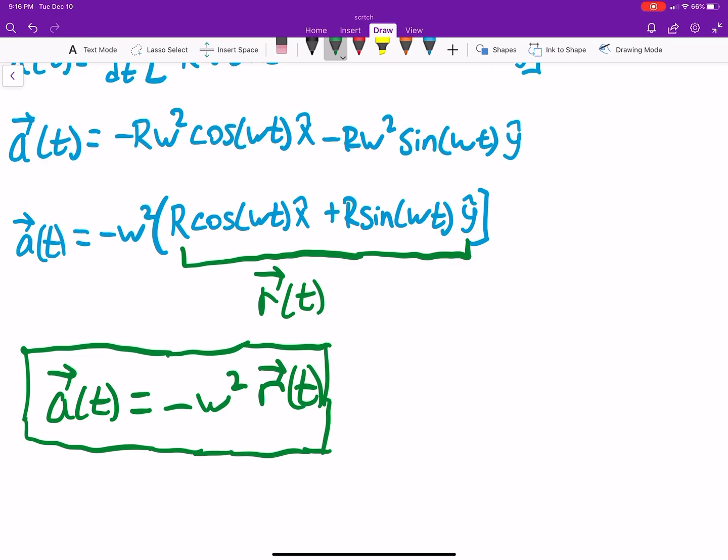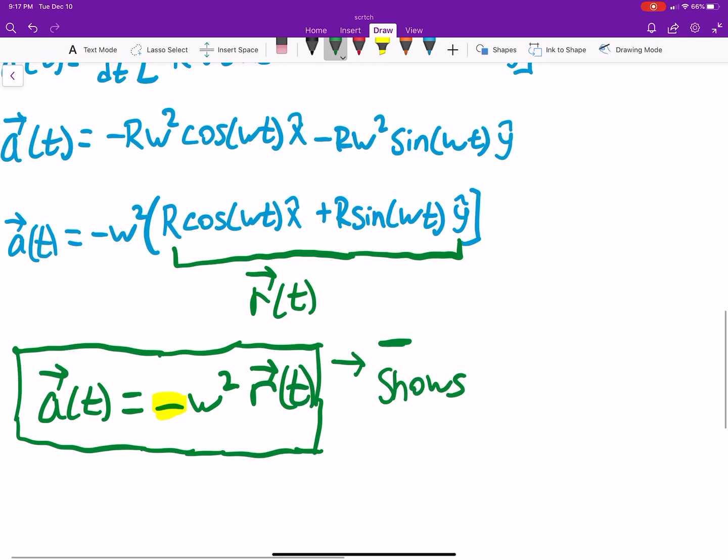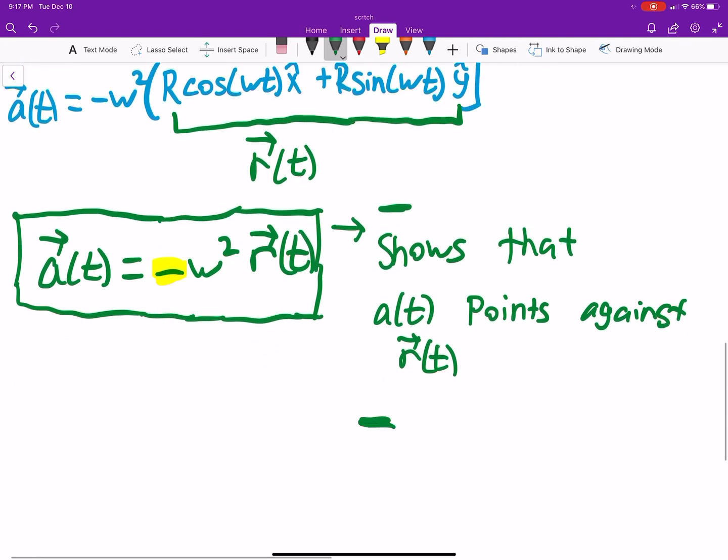So this is a way of thinking of our acceleration function. Now let's talk a little bit about this negative we see right here. What does this mean? Well, the negative, it shows that the acceleration points against r of t, or another way of thinking of it, it shows acceleration is center seeking.